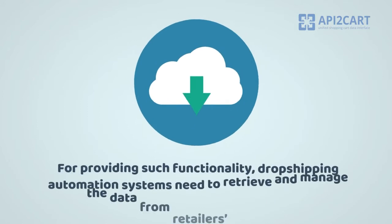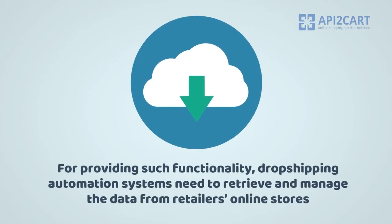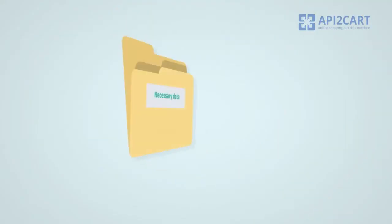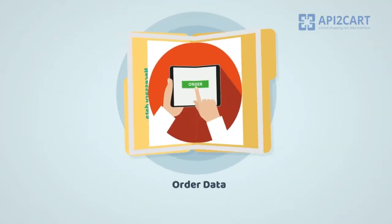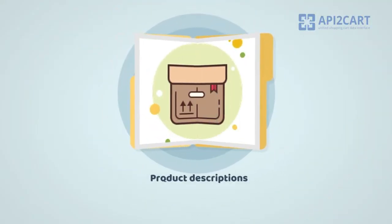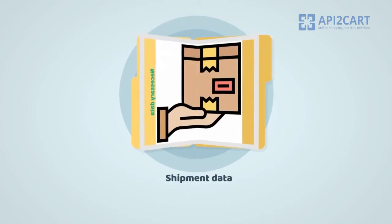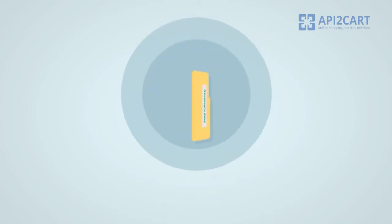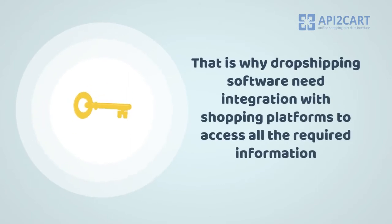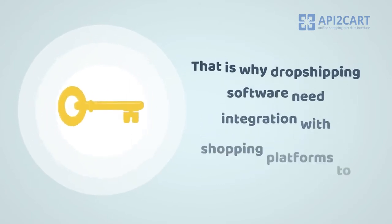For providing such functionality, dropshipping automation systems need to retrieve and manage the data from retailers' online stores. It includes the info on orders, product descriptions, customers and shipments stored on shopping platforms' databases. That is why dropshipping software needs integration with shopping platforms to access all the required information.